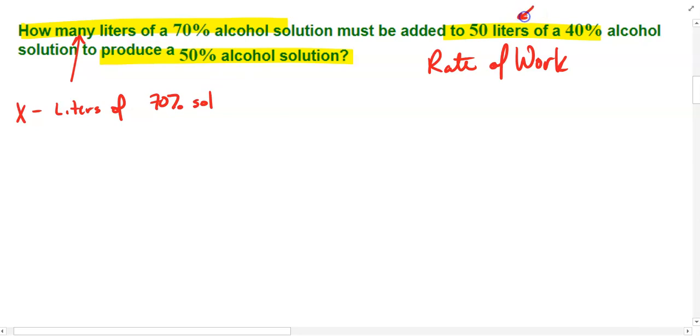Then, y could represent the number of liters of the 40% solution, and in this case, we actually know what y is equal to - that y has to be 50 liters. That'll be kind of helpful. That's a component in our system that's already identified.